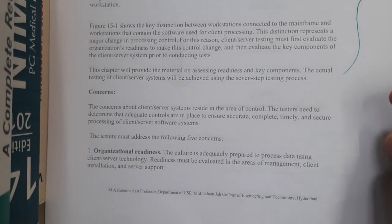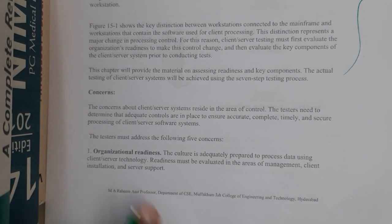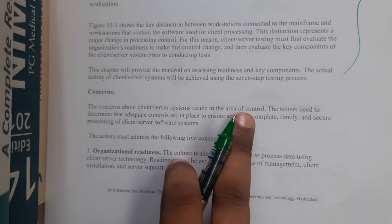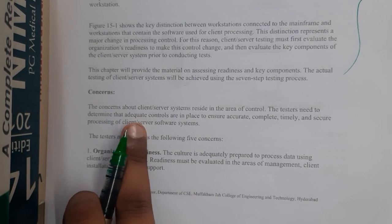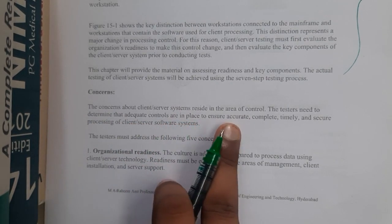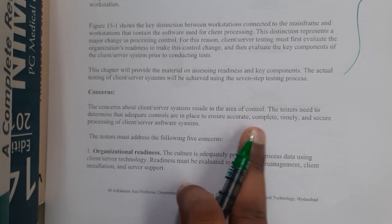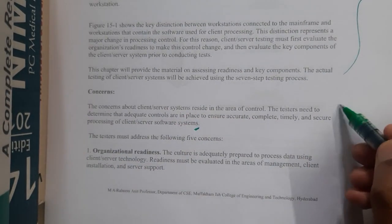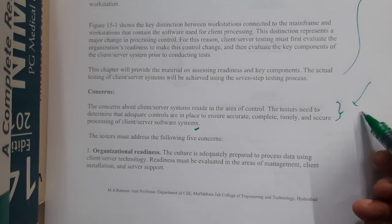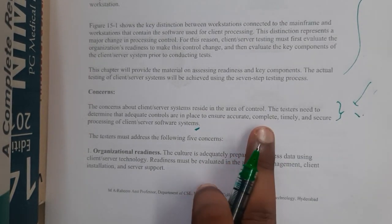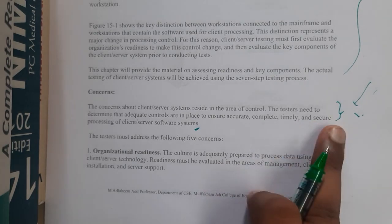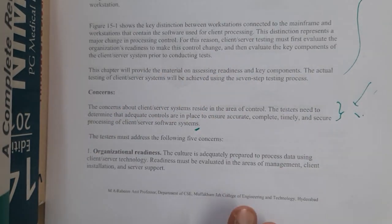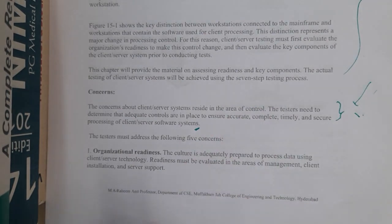The main concerns for client-server systems reside in the area of control. Testers need to determine that adequate controls are in place to ensure accuracy, completeness, timeliness, and security. The main requirements are to secure the data properly, complete tasks efficiently, and make the whole process secure. There are five different concerns to resolve.